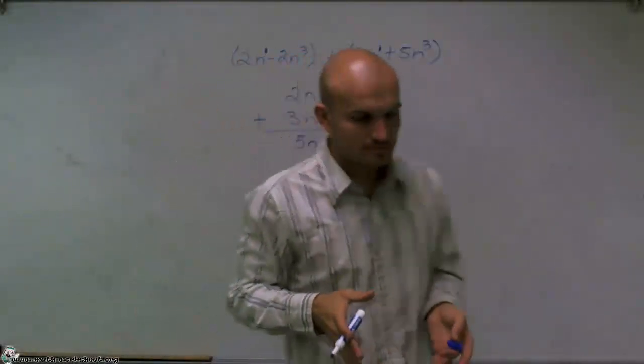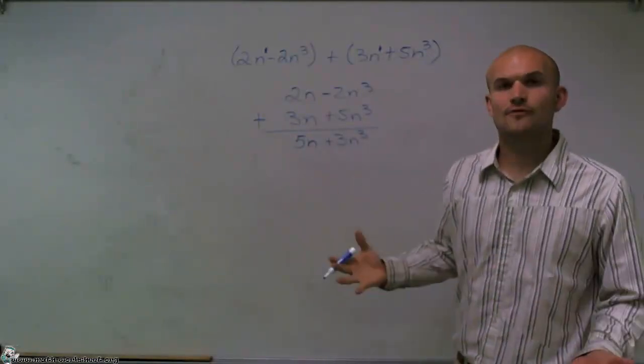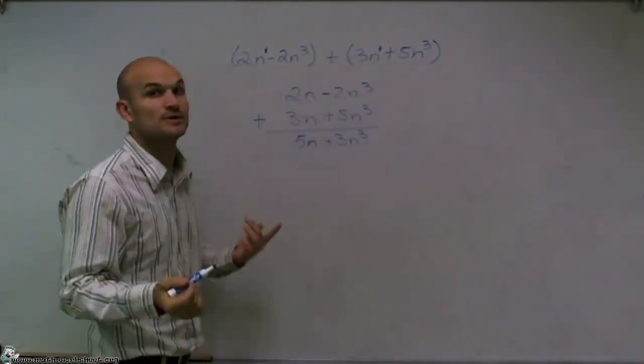Now, the last thing we want to do is make sure that we write this in descending order. So our standard form for our polynomial, we want to write the largest exponent, which we call the degree, first.